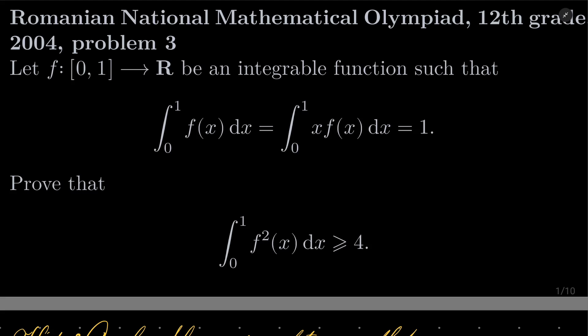Let f from the interval [0,1] into R be an integrable function, such that the integral from 0 to 1 of f equals the integral from 0 to 1 of x times f dx equals 1. We wish to prove that the integral from 0 to 1 of f squared is greater than or equal to 4.